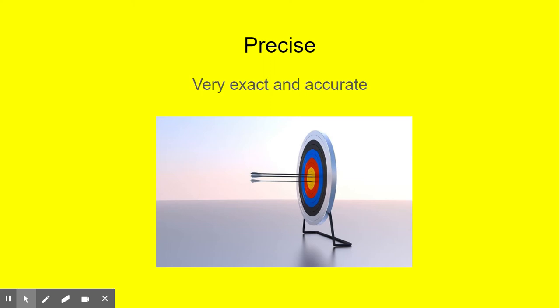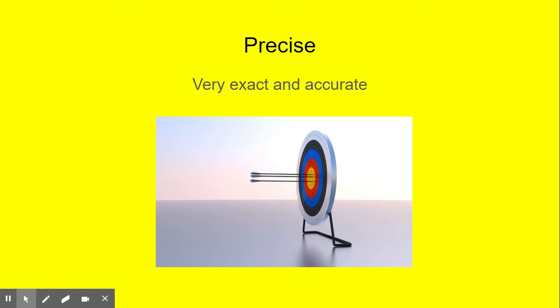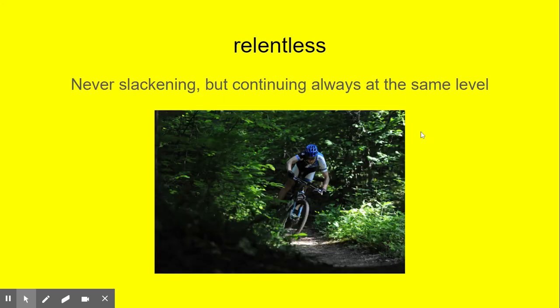Precise. Say that word with me: precise. Precise means it is very exact and accurate. This is a picture of a person who was very precise in hitting this target — you see how these arrows are dead center? That's precise, boys and girls. Accurate. For some of you who like to hunt, you have to be precise and zero in on that correct target. Good job.